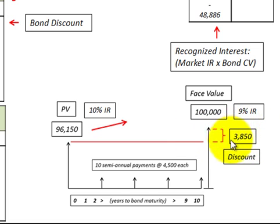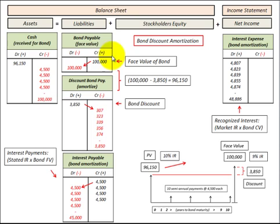And then you have that difference amount, and that's what has to be amortized as an interest expense on that bond over the life of the bond. So let's look at the entries. In this case we issued a bond for $100,000, so we increase our bonds payable by that amount. And we only received cash — its present value — of $96,150.